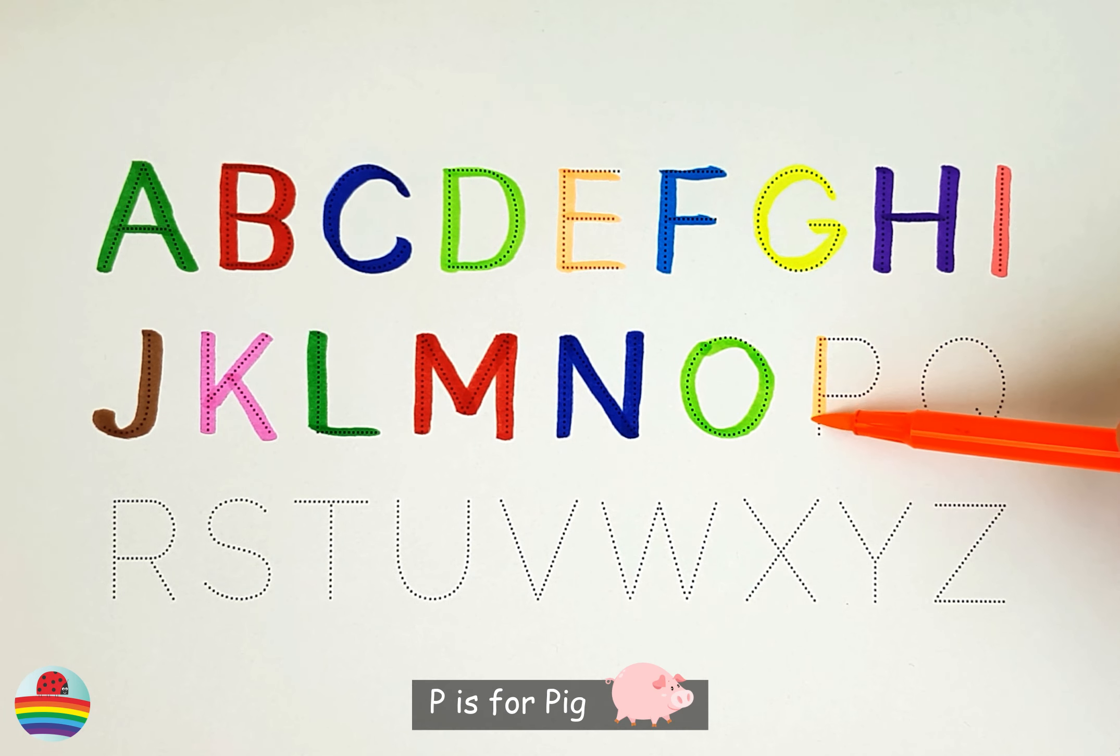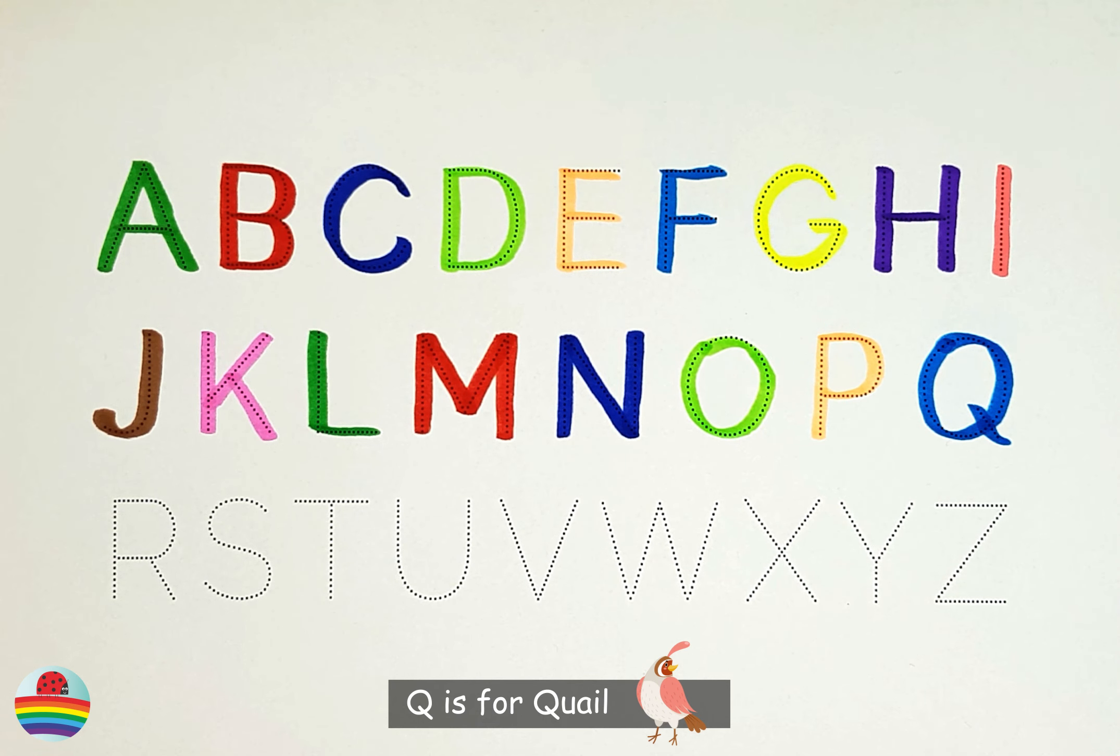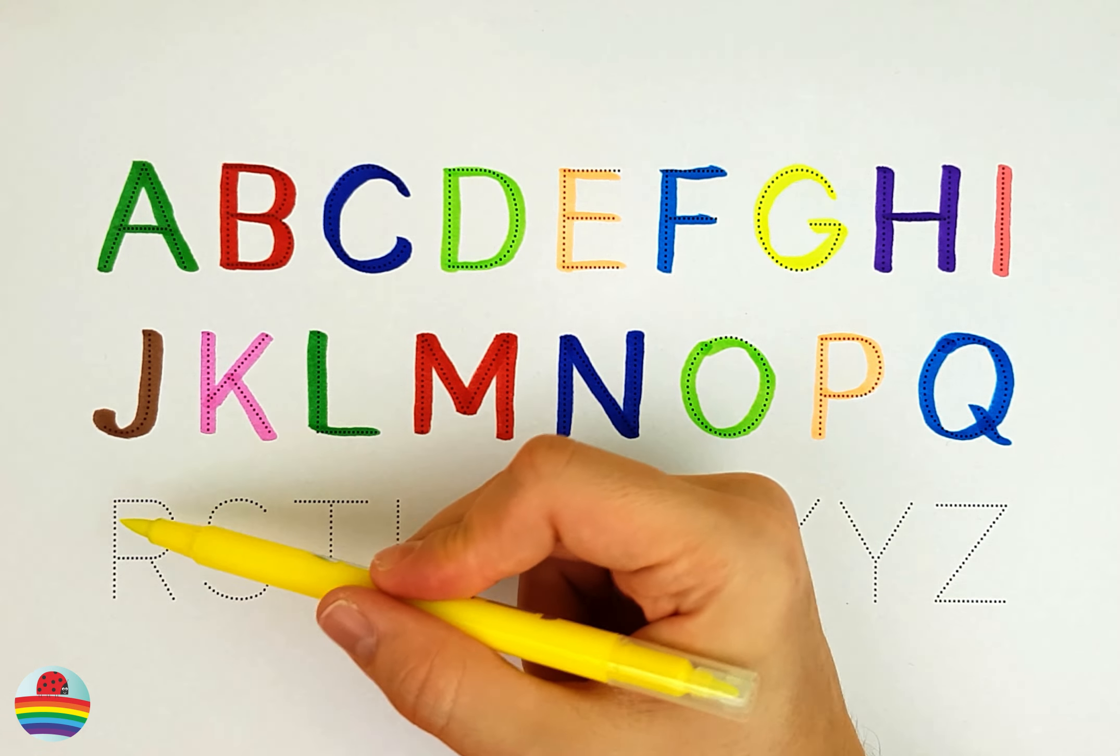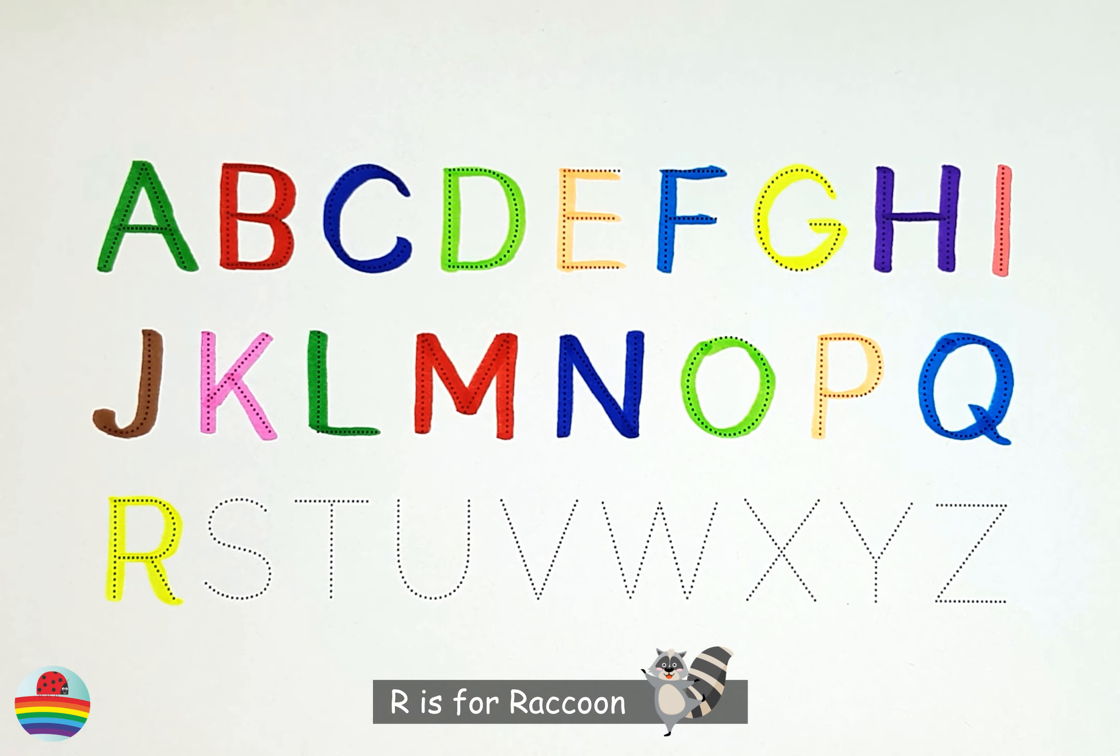P. P is for Pig. Q. Q is for Quail. R. R is for Raccoon.